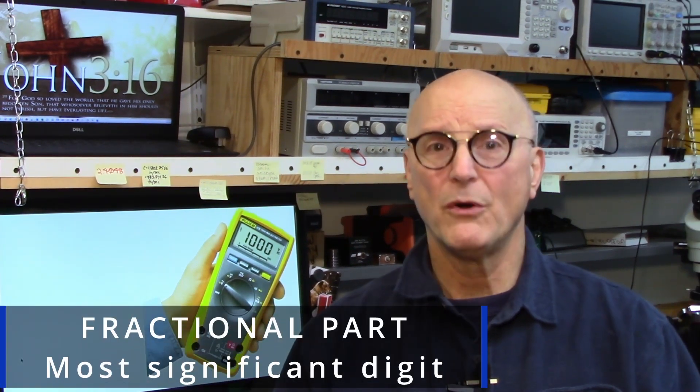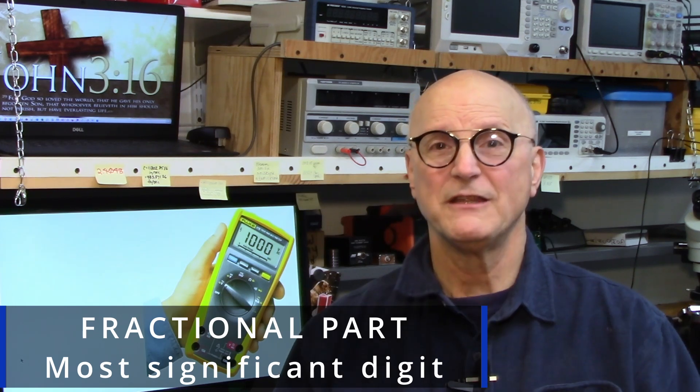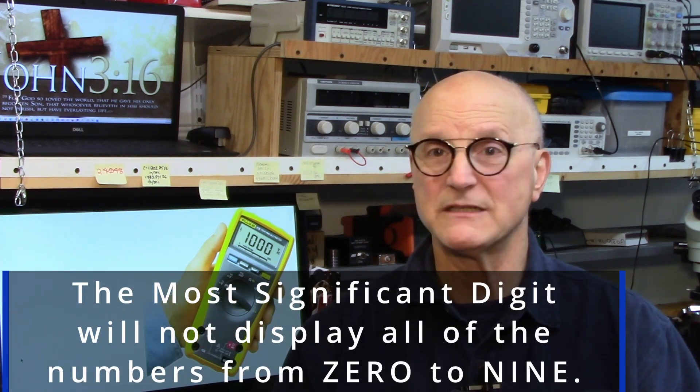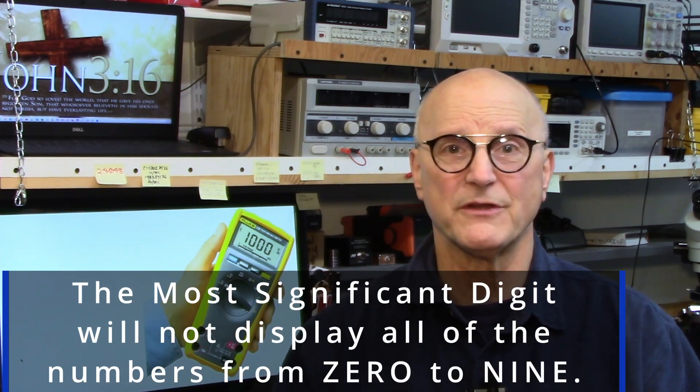Our first thought is the least significant digit, the digit to the far right, because that is where we find the fractional part of numbers that we generally think about. However, this is not the case here. This actually refers to the most significant digit, the digit to the far left. Now that we know where it is, what does it mean? In short, it means that the most significant digit cannot and will not display all of the numbers from zero to nine.